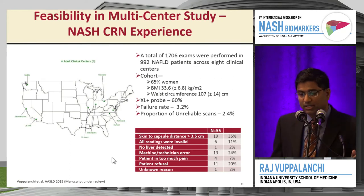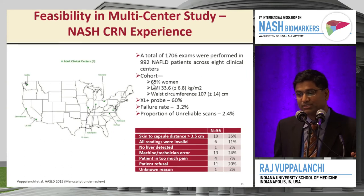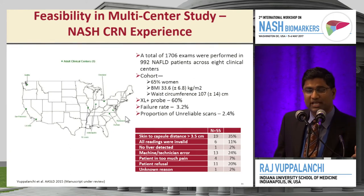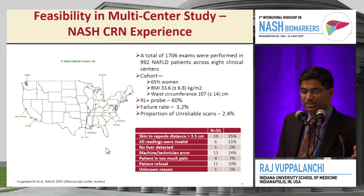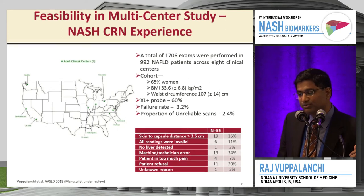As part of NASH-CRN, we implemented FibroScan across eight clinical centers in the United States and performed 1,700 exams in 992 NAFLD patients. 65% were women. We used the extra-large probe 60% of the time, which raises questions about the relevance of studies done only with the medium probe. Our failure rate was 3.2%, and the proportion of unreliable scans due to excessive variability was 2.4%. Of the 55 patients where FibroScan could not be completed, various reasons were identified.